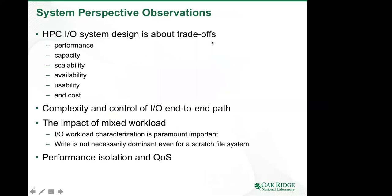To summarize the system perspective: system design is about trade-offs — we make compromises on performance, capacity, scalability, availability, and cost. The IO end-to-end path is very much decentralized and complex. We also need to be mindful about the impact of mixed workloads. For applications where performance is paramount, it's really necessary to do careful workload characterization. A lot of research is also going into performance isolation and quality of service.